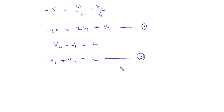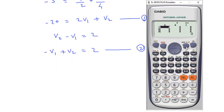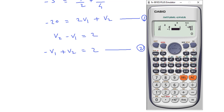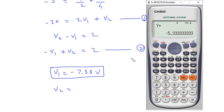We will now solve Equation 1 and Equation 2. Here we can see v1 has coefficient 2 in one equation and 1 in the other, equaling minus 20. Solving these, v1 is equal to minus 7.33V and v2 is equal to minus 5.33V.